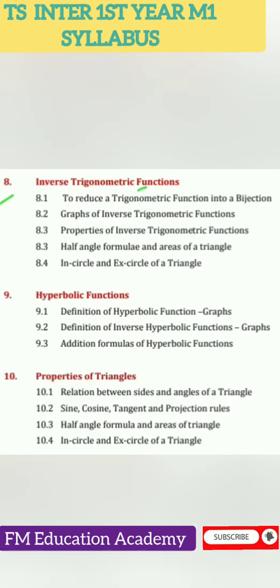Chapter 8 is inverse trigonometric functions: reducing a trigonometric function into a bijection, graphs of inverse trigonometric functions, properties of inverse trigonometric functions, half angle formula, and areas of a triangle in a circle.